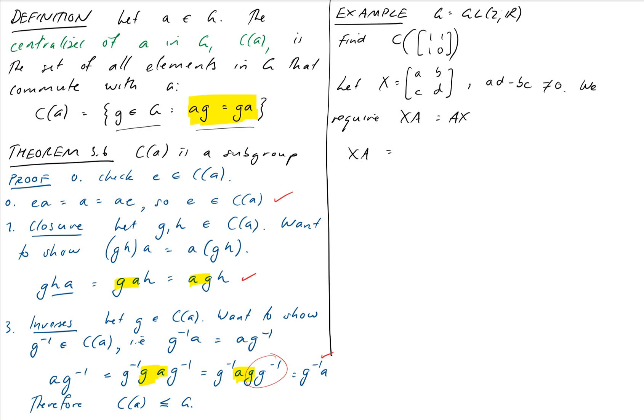Now we require XA to equal AX. So let's just figure out what that is. This XA is going to be A, B, C, D, times 1, 1, 1, 0, which will equal A plus B, A, C plus D, C. And AX will equal 1, 1, 1, 0, times A, B, C, D. And just doing a matrix multiplication, we'll get A plus C, B plus D, A, and B.